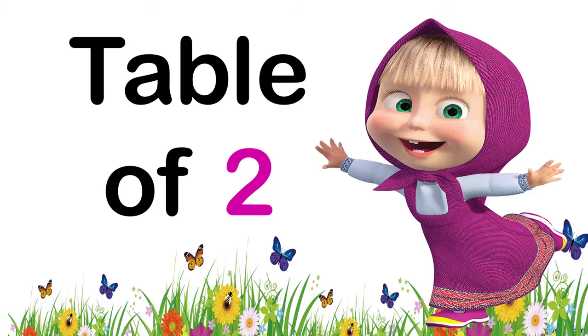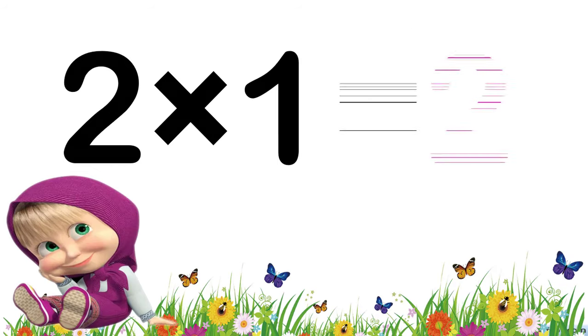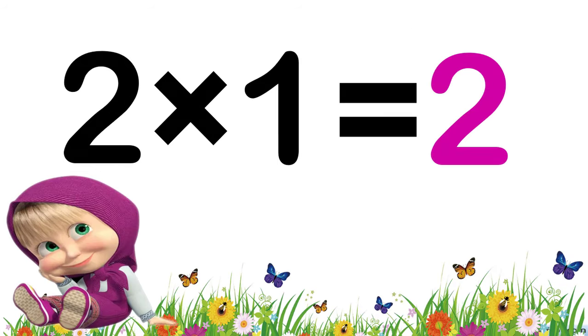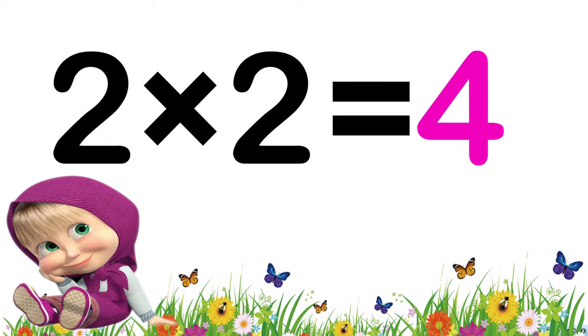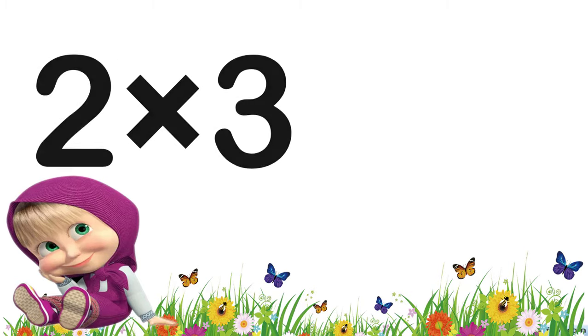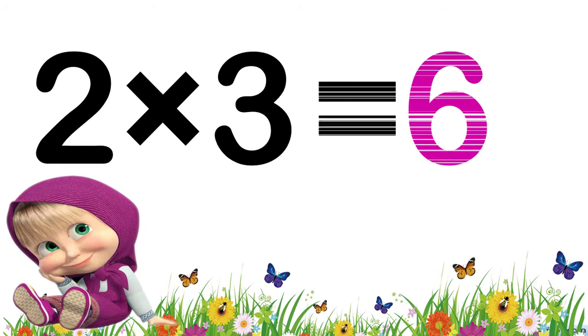Table of two. Two ones are two. Two twos are four. Two threes are six.